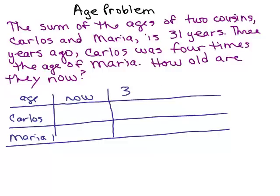Think about how old you were three years ago. How would you figure out what that number would be? You would subtract three from whatever your age is right now. Okay, so the tricky part here is that their sum, the sum of their ages is 31.